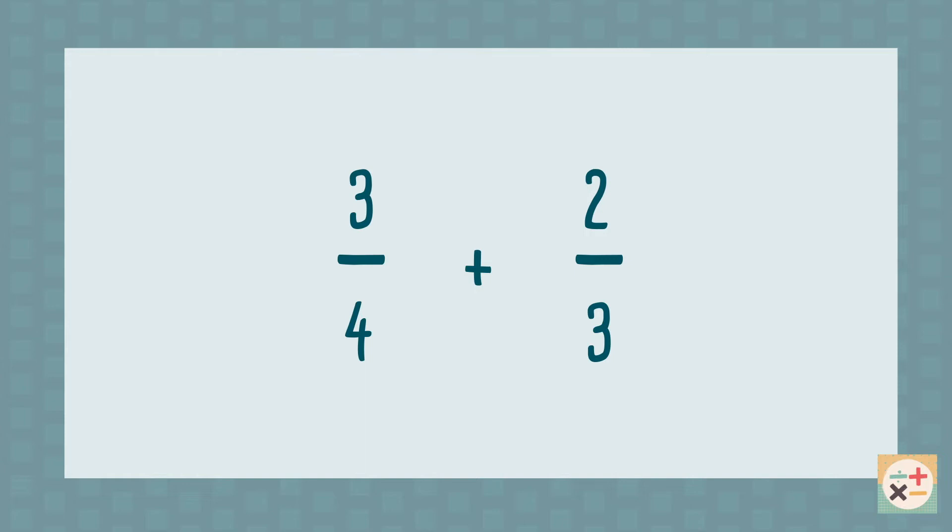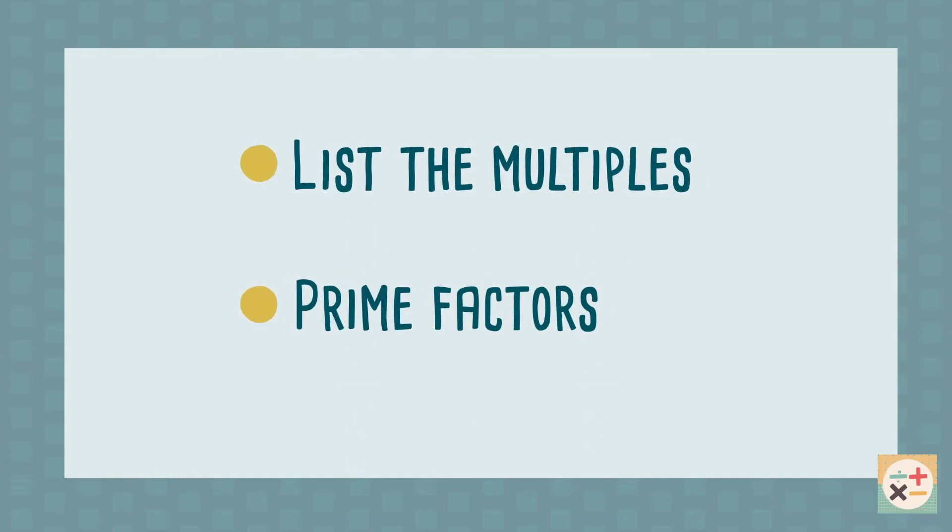There are two methods to find the lowest common multiple: listing the multiples and using prime factors.